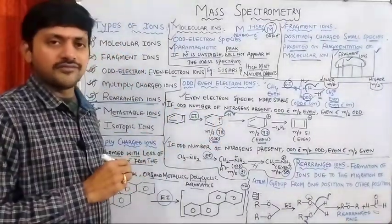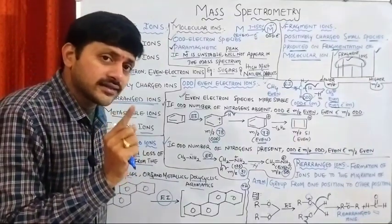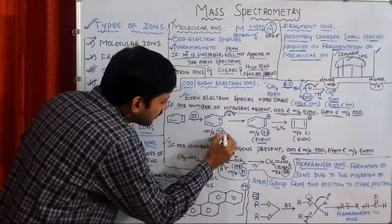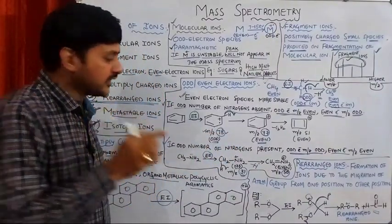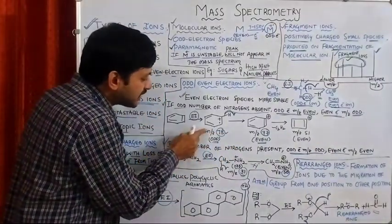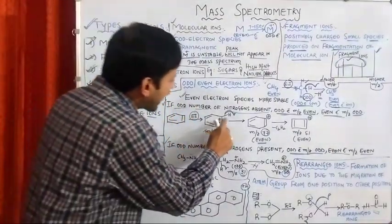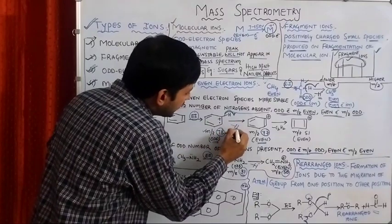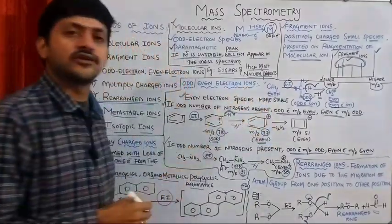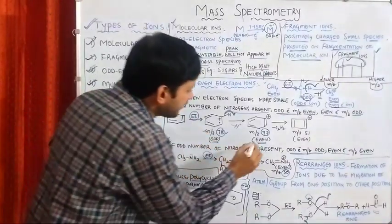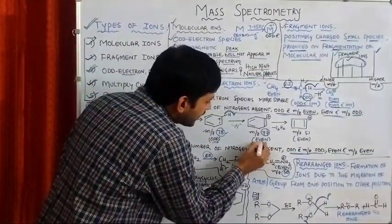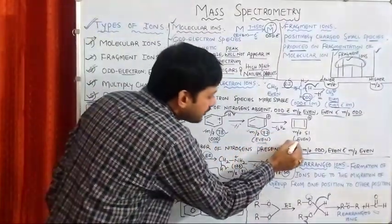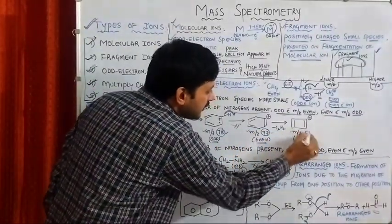Molecular ions are the odd electron species. For odd electron species, the m/z will be even. So odd electron species m/z will be even. Then upon fragmentation, a radical leaves and one fragment ion forms. The fragment ion is an even-number ion. Even-numbered ion m/z is odd.